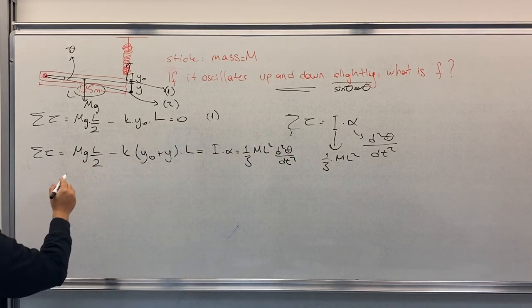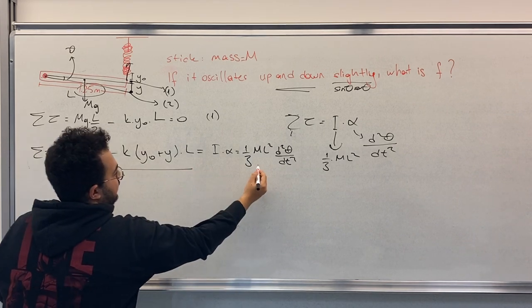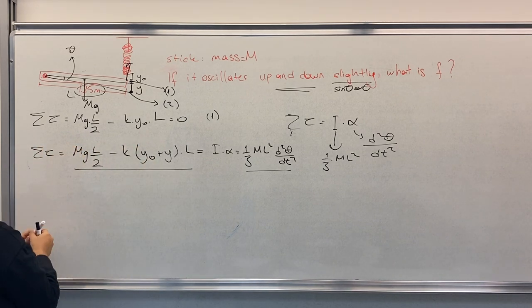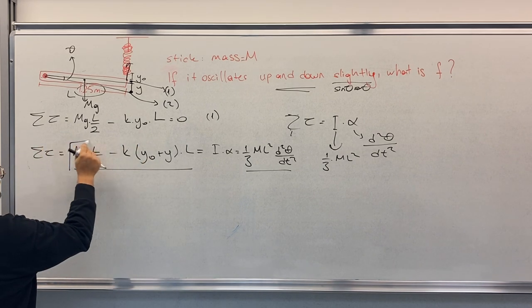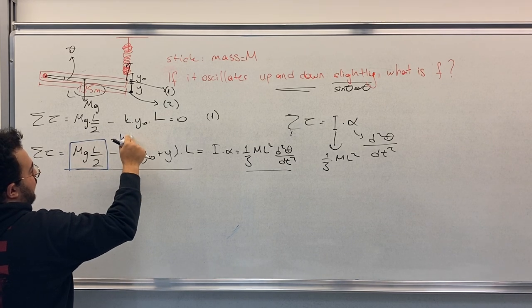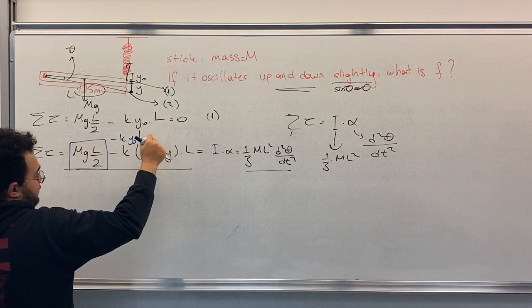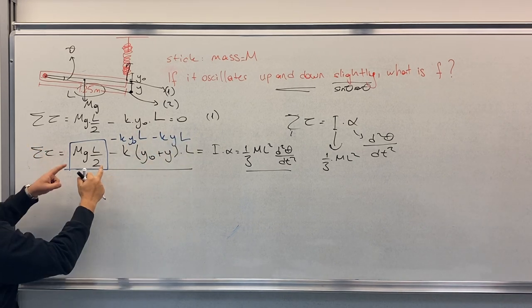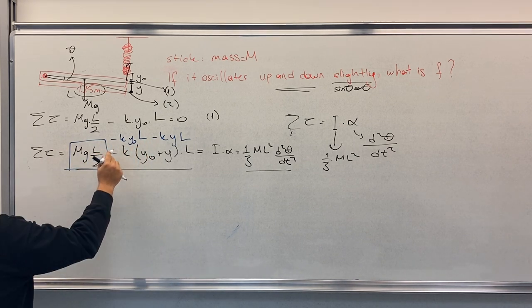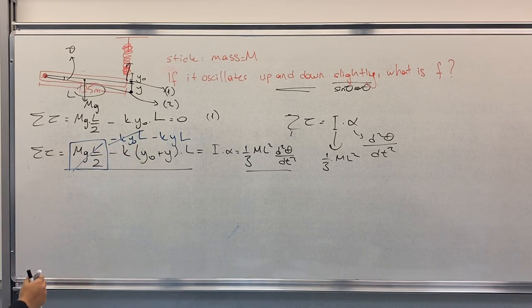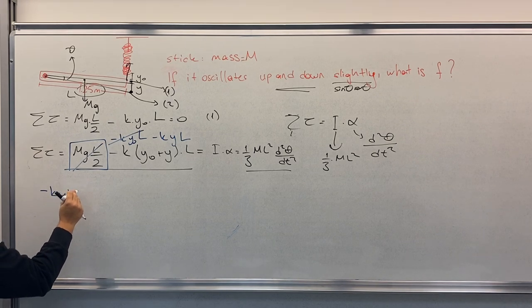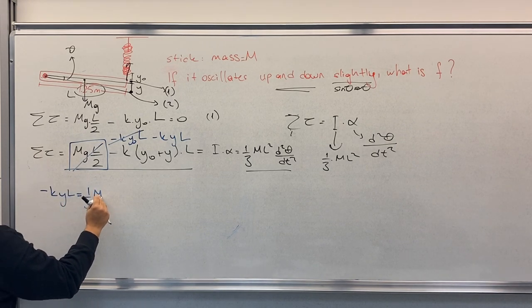So this is I times alpha, which equals to 1 over 3 M L squared. Now, if you look at equation 1, you can see that if you open this equation, minus K Y L, this here and this here actually cancel each other. So we get minus K Y L equals to 1 over 3 M L squared.